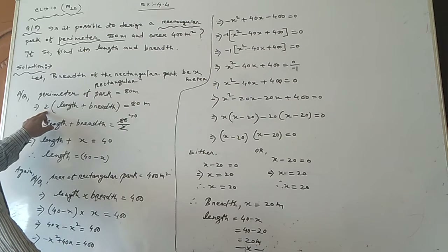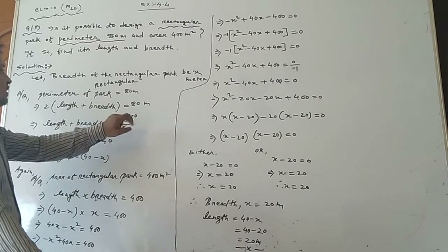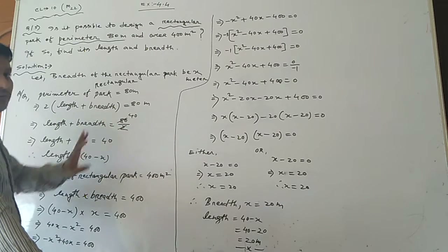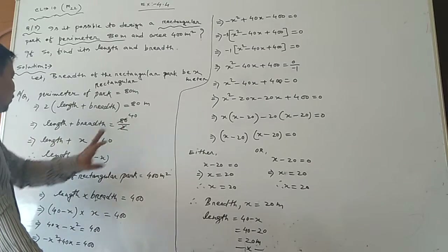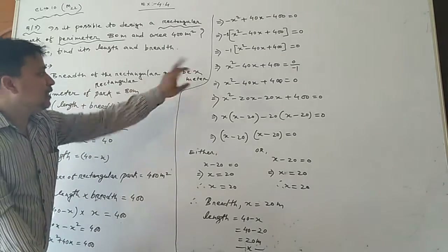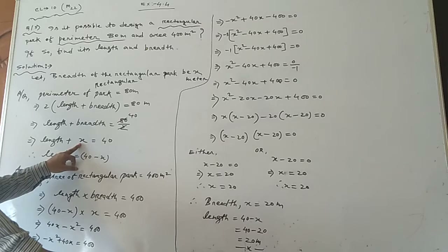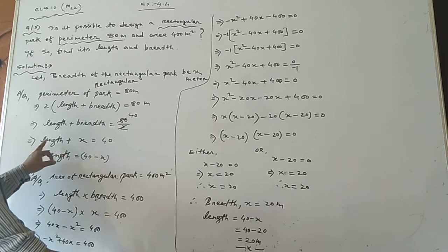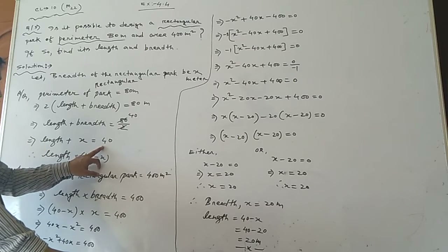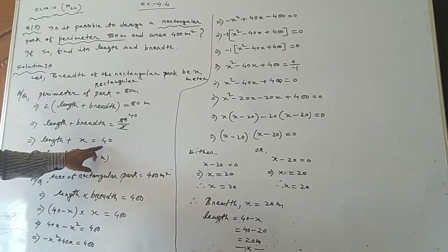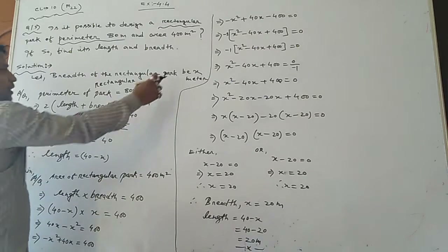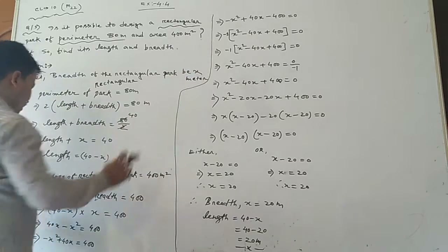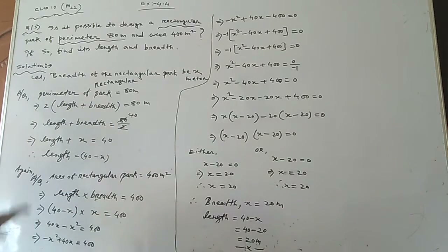Shift 2 to the right side, then 80 divided by 2 gives 40. So length plus breadth equals 40. Since breadth is declared as x, length plus x equals 40, then shift x to the right side: length equals 40 minus x.